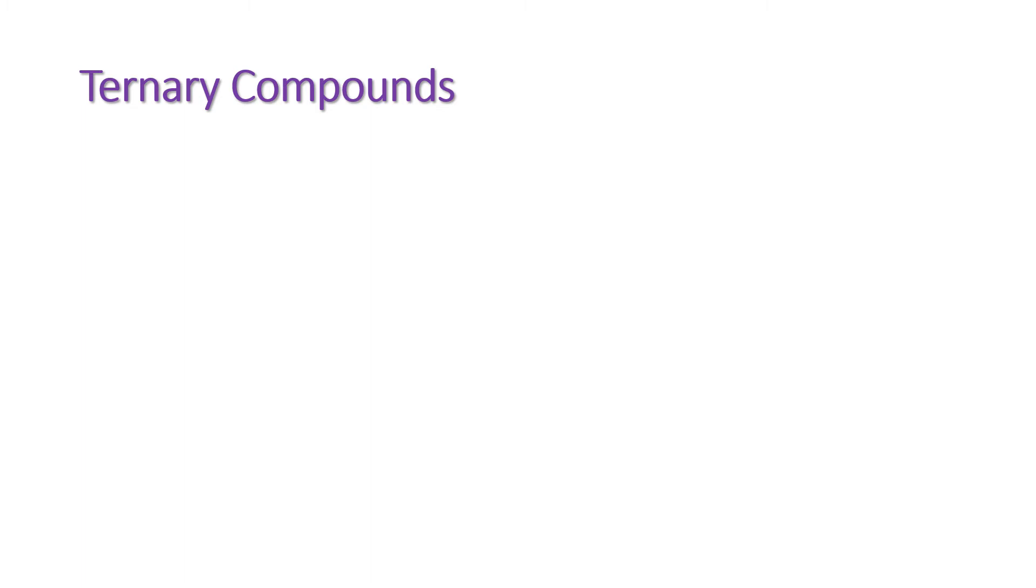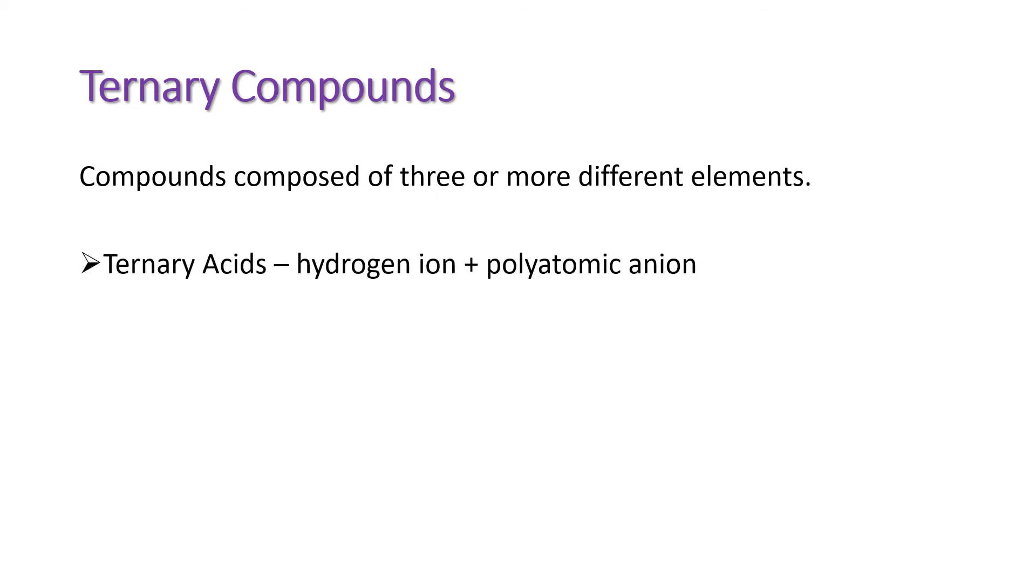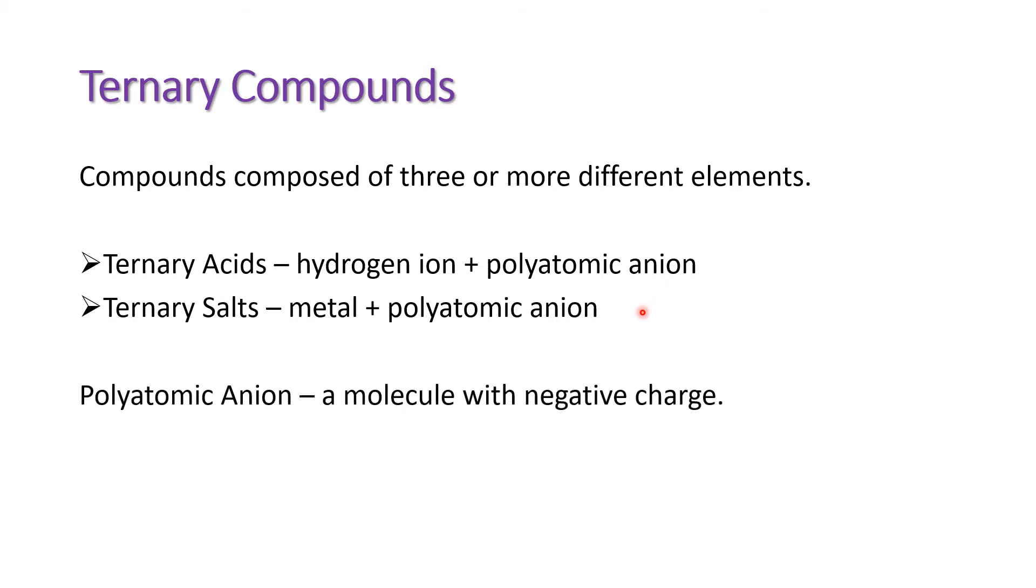Let us now talk about ternary compounds. When we say ternary compounds, these are compounds composed of three or more different elements. We have ternary acids, wherein hydrogen ion is combined with what we call polyatomic anion. We also have ternary salts, wherein a metal, to be specific, an alkali metal, will combine with a polyatomic anion. Polyatomic anion is a molecule with negative charge, that means it is a compound with negative net charge.